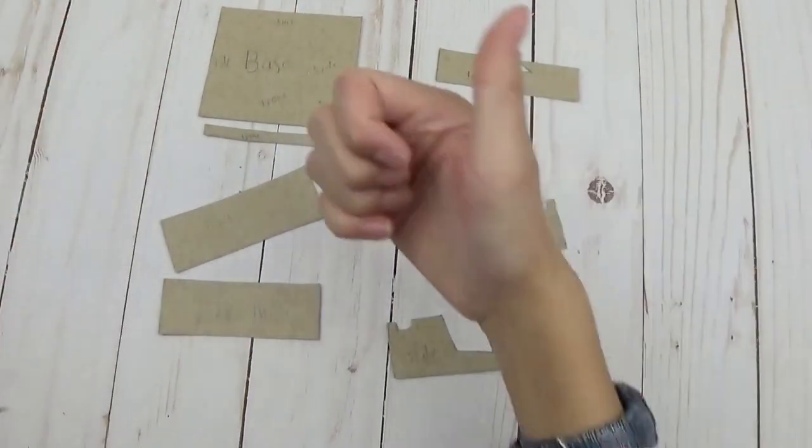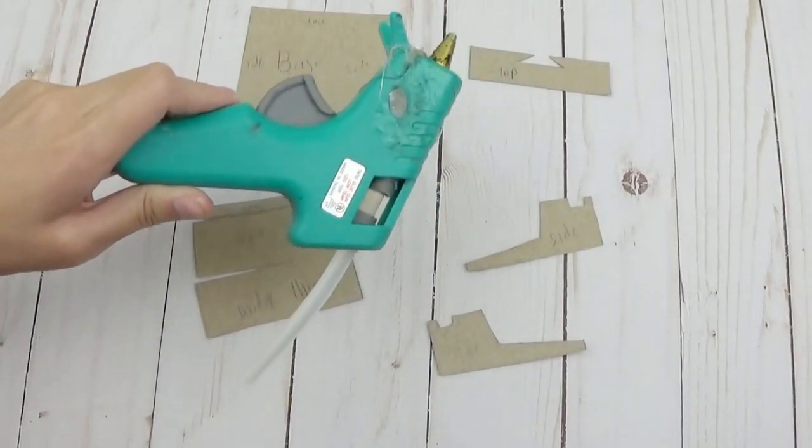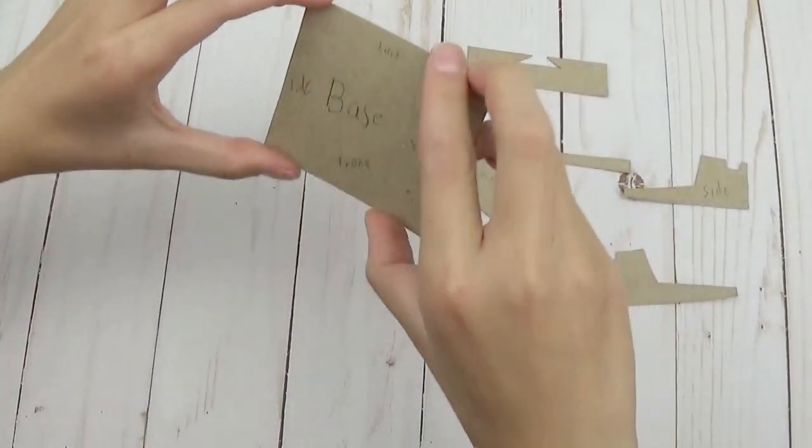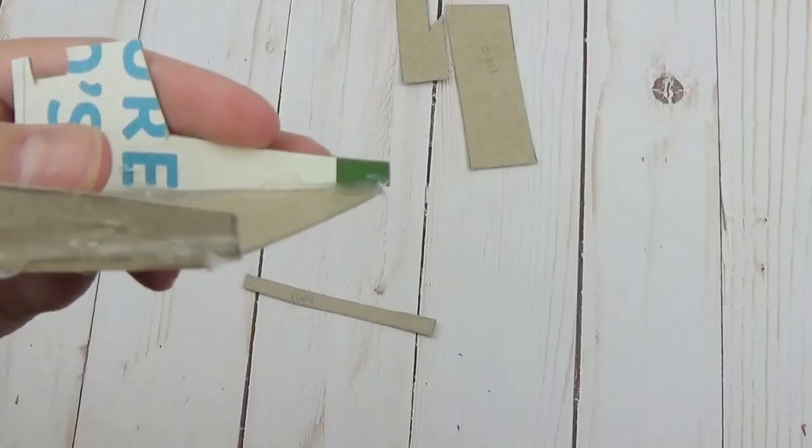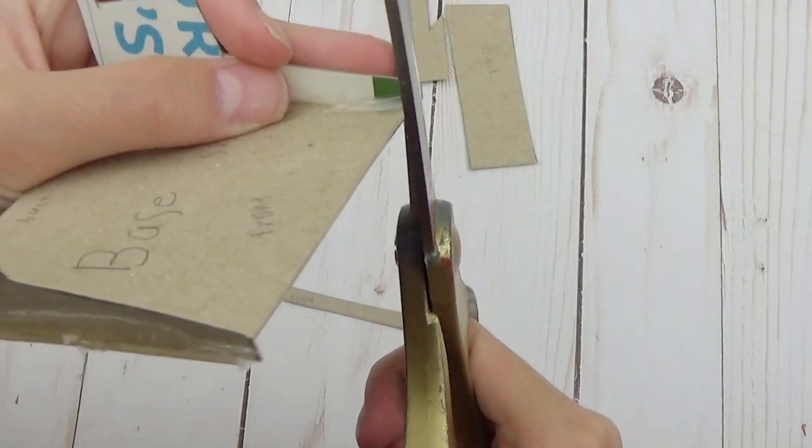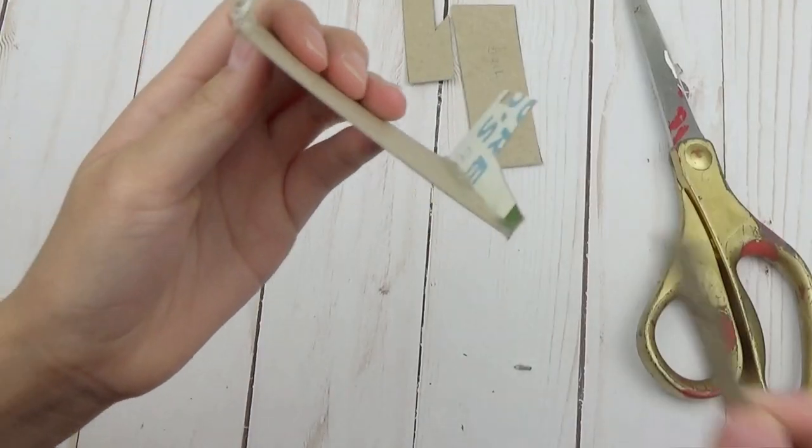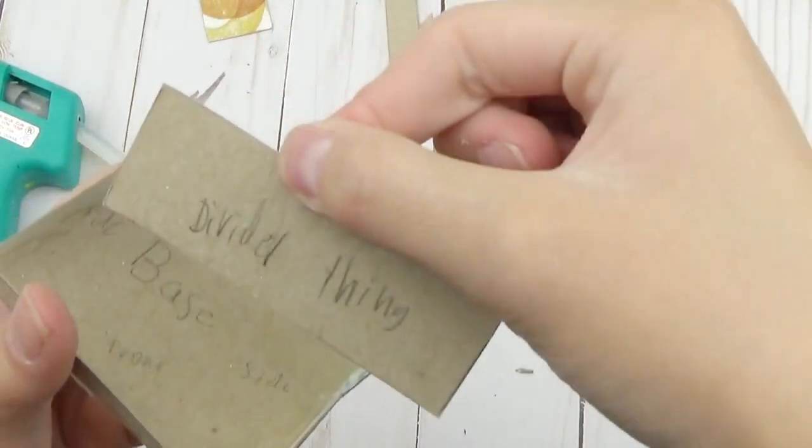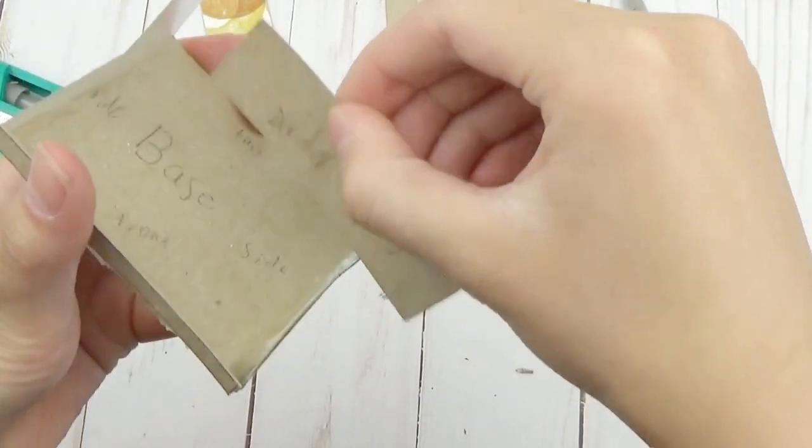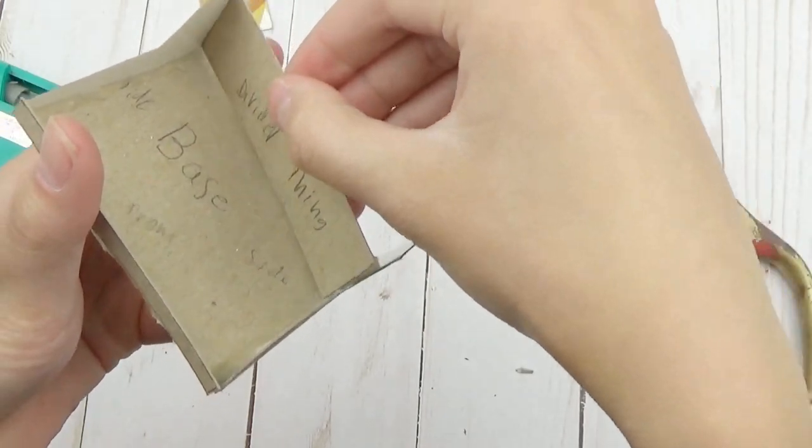Plug in your hot glue gun. Grab your base piece and hot glue on one of the sides like this, then glue on the other side and cut off the ends if they're a little bit too long. Then hot glue on your front piece. Next you want to glue in this little divider piece right here, and if it's a little too long you can just trim it.